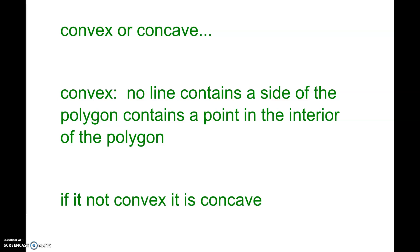Alright, convex or concave. Sometimes you will hear these terms in science. Convex: no line contains a side of the polygon, contains a point in the interior of the polygon. So something like this versus something like this. If I were to take and follow the side and follow the side and follow a side, none of those lines, unless you draw errantly like I just did, none of those sides have points on the interior. Whereas if I draw this line, it will have points on the interior.